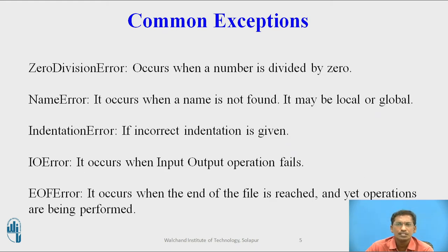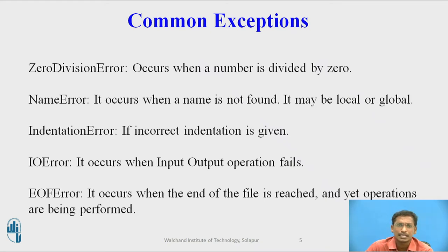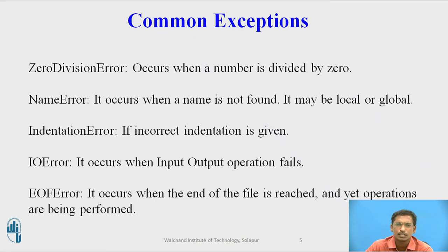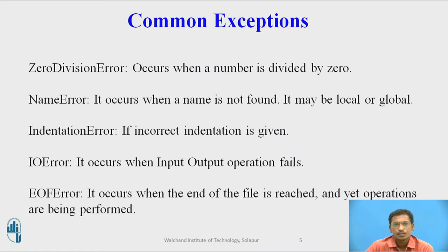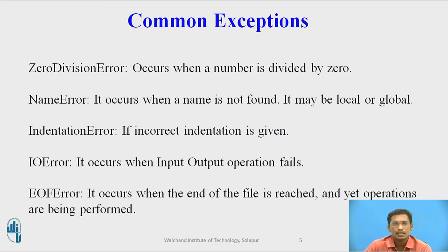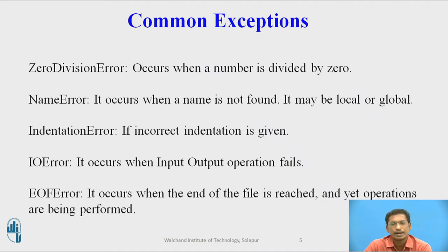These are common exceptions. The first one is ZeroDivisionError, which occurs when a number is divided by zero. The second is NameError, which occurs when a name is not found — it may be local or global. Third is IndentationError, if incorrect indentation is given. Then IOError, which occurs when an input-output operation fails. And EOFError, which occurs when the end of file is reached but operations are still being performed.